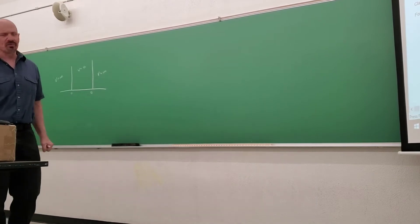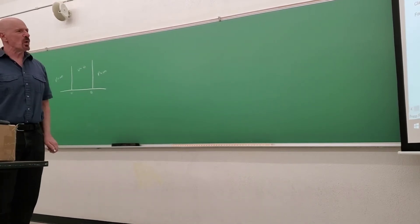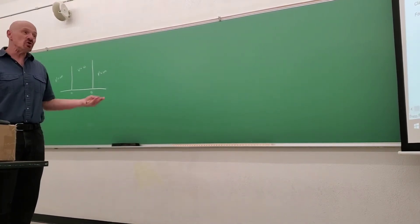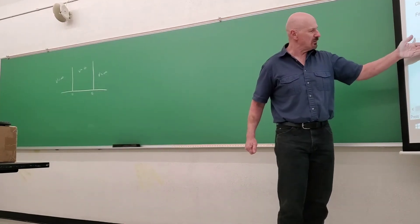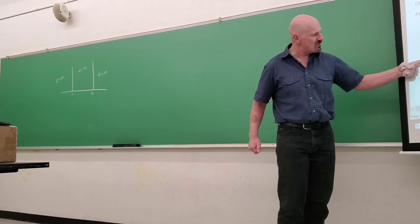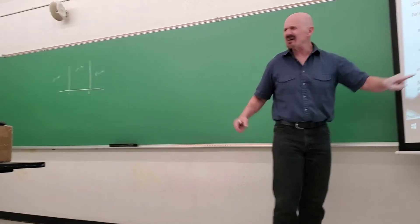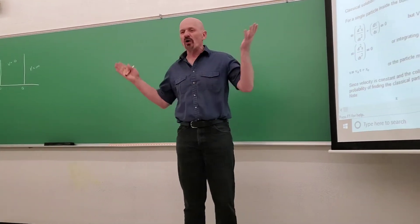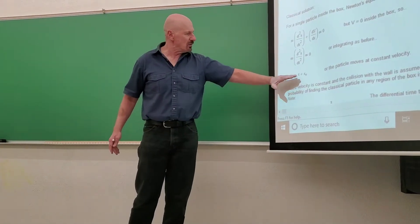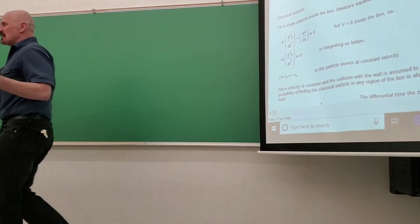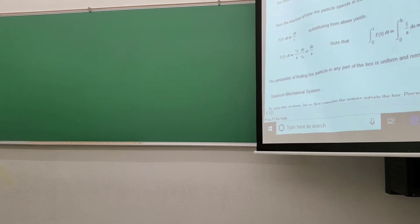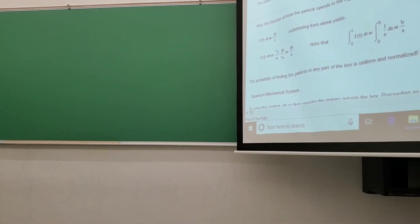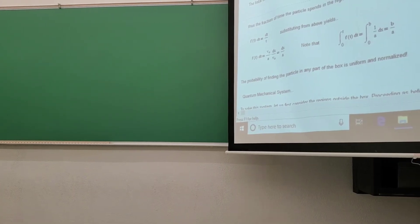Here are Newton's equations of motion, where we have no potential at all. Mass times acceleration equals zero, which gives us an equation of motion. It has a v₀t term, and if the particle starts at zero, it's simply velocity times time—back and forth. So it has an equal probability of being in any particular region of space. We'll see what quantum mechanics has to say about this and see if we can reconcile the differences.